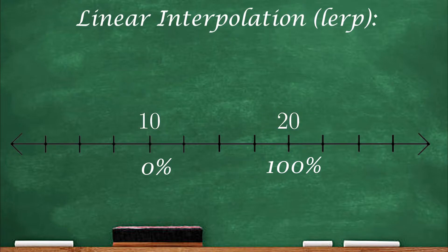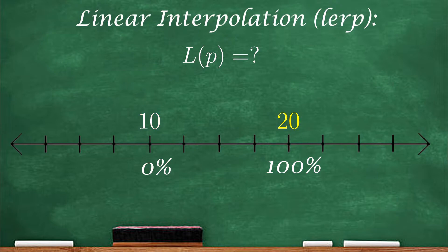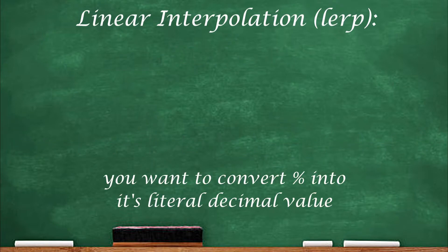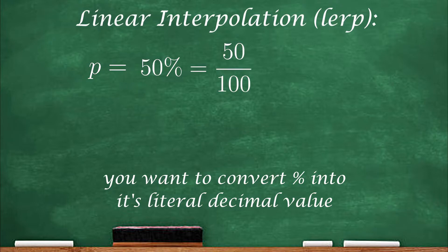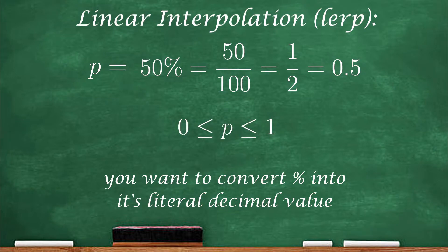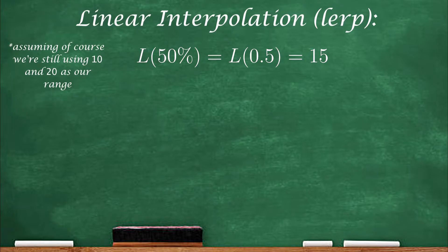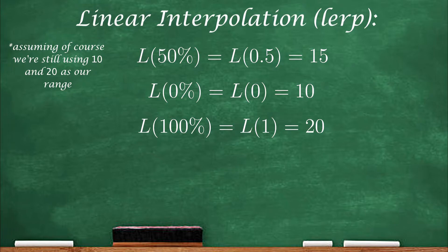This makes it easier to parameterize this data and create a function based on the chosen percentage. Let's define our LERP function as L of P, where P is the percentage. Using initial value 10 and final value 20: L(50%) = 15, L(0%) = 10, and L(100%) = 20. For computing, it's easier to format the percentage as its decimal value — so 50% becomes 0.5 — meaning P is always some number between 0 and 1. So L(0.5) = 15, L(0) = 10, and L(1) = 20.